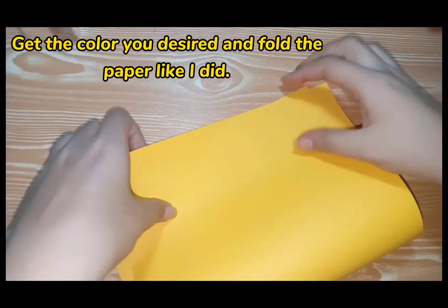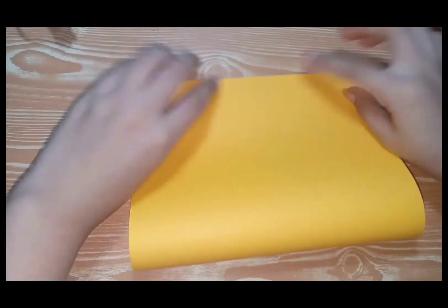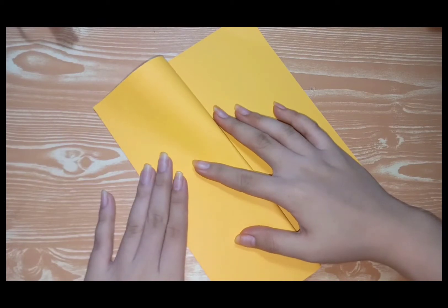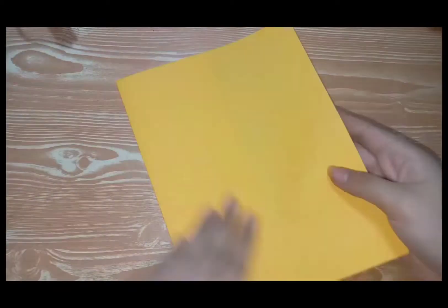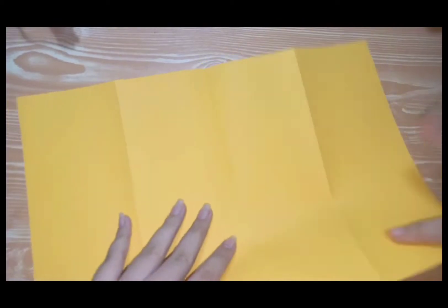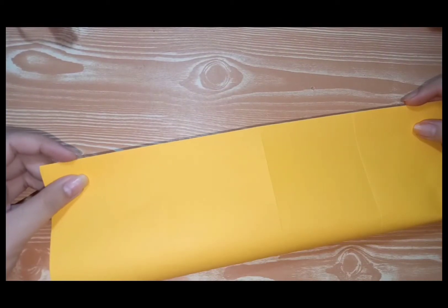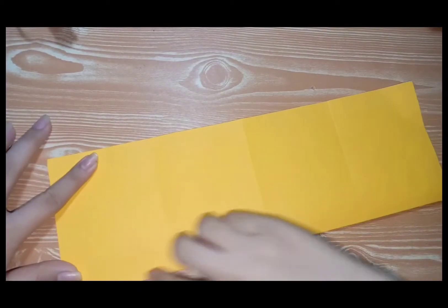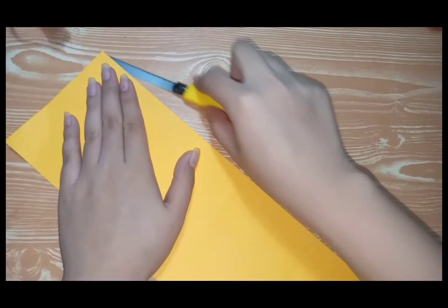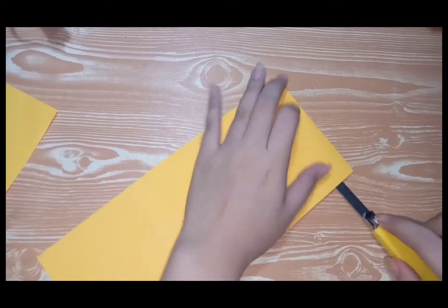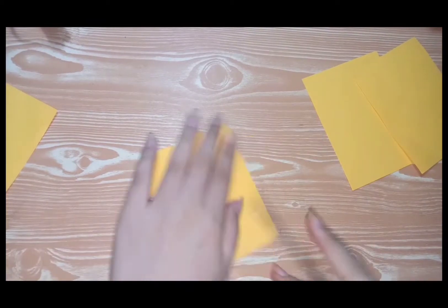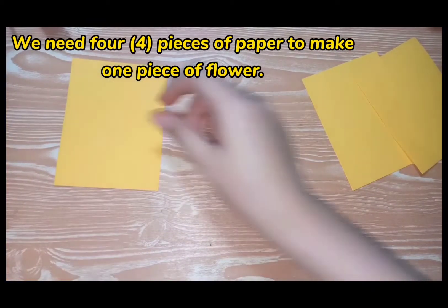Get the color you desired and fold the paper like I did. Cut the folded sides using a cutter or a scissor. We need 4 pieces of paper to make 1 flower.